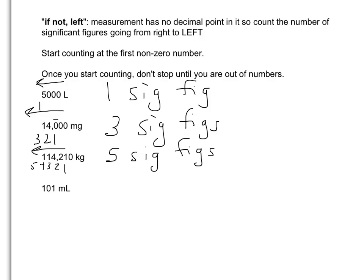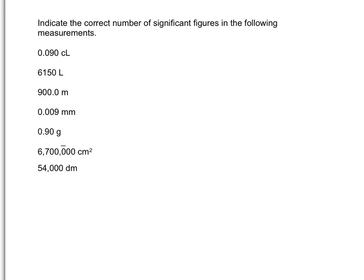And finally, in 101 milliliters, no decimal point, count to the left: one, two, three — so three sig figs. Please take a few minutes to determine the number of significant figures in each of the following measurements. Pause the video now, and then come back and check your answers.